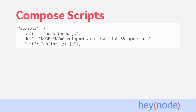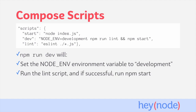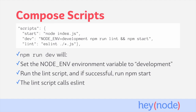You can use npm run to start a script from within any other script. Take a look at this example set of scripts for a project. Executing npm run dev will do the following: set the node env variable to development, then run the lint script, which if successful will run the start script. The lint script uses eslint to check your code for errors, and then finally, if the linting was successful, the start script will start the project. Now anyone can start your development environment just by running the dev script.